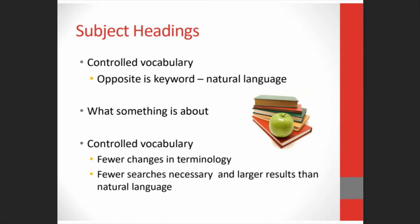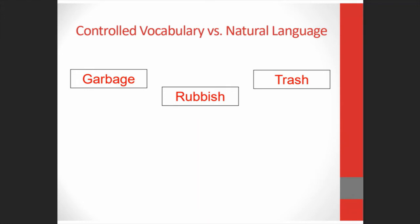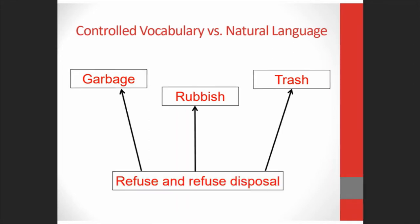Let's look at an example of how this would work in real life. Someone might use the term garbage, and someone else might use rubbish or trash. But instead of searching all those terms, you could search on 'refuse and refuse disposal,' which is not exactly what I would think of searching on, but we'll go from there. This is why natural language is actually a great way to start your search — but once you've found that subject heading in the record in an online catalog, these are typically hyperlinked, and so one click is going to bring lots of results.